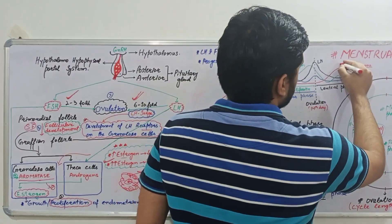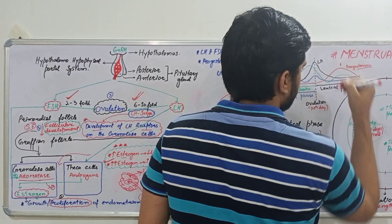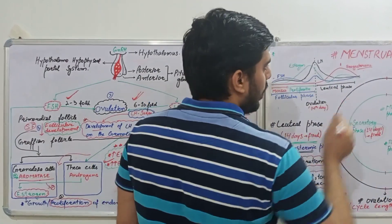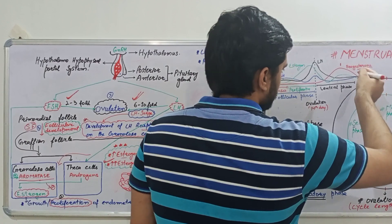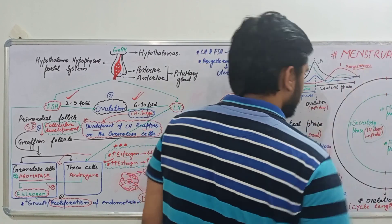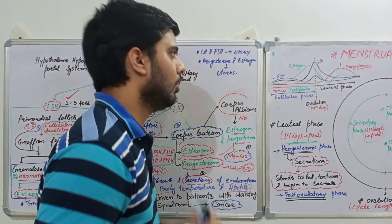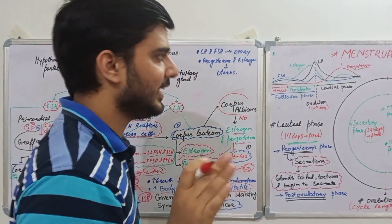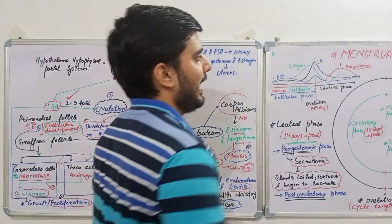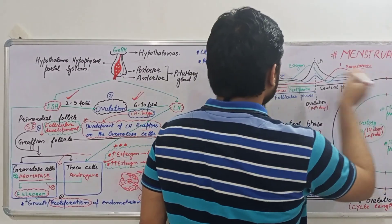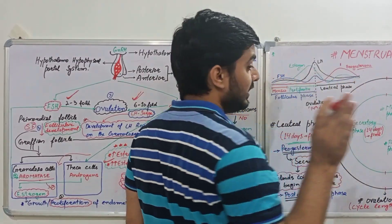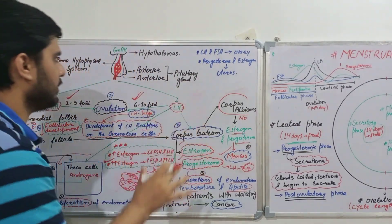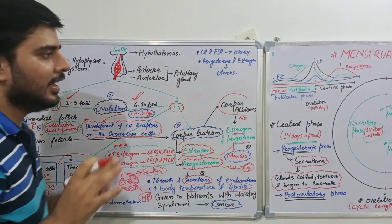The peak of progesterone and estrogen is around day 23 of the cycle. Then we see a decrease in both progesterone and estrogen levels because the corpus luteum involutes. As hormone levels decrease, we observe menses or per-vaginal discharge of blood. That covers the hormonal changes within the menstrual cycle.